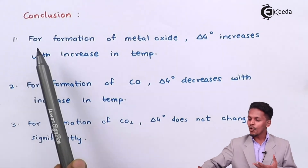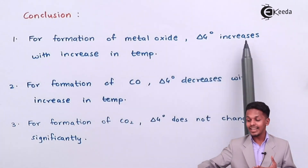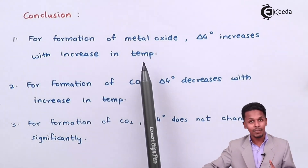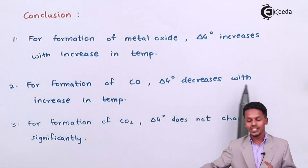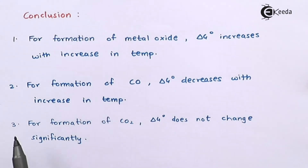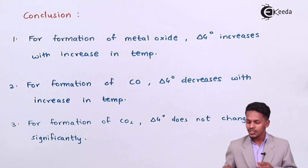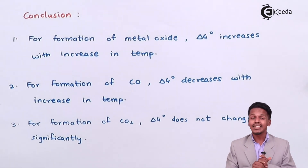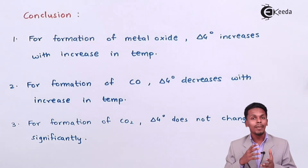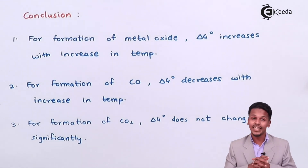The conclusions are: for the formation of metal oxide, delta G° increases with increase in temperature. For the formation of carbon monoxide, delta G° decreases with increase in temperature. For the formation of carbon dioxide, delta G° does not change significantly with change in temperature. These conclusions from thermodynamic study play a vital role in understanding which metal can form metal oxide and which metal can be easily reduced depending on the choice of reducing agent.